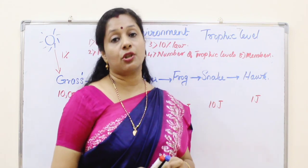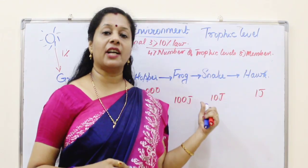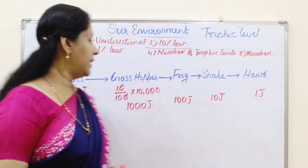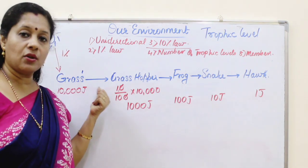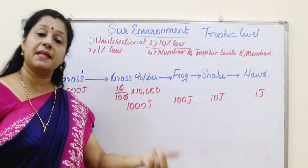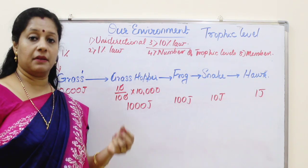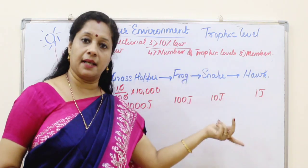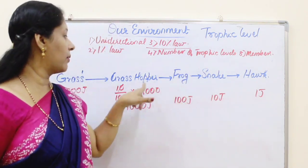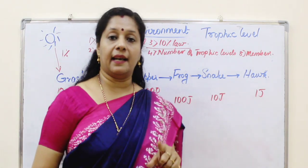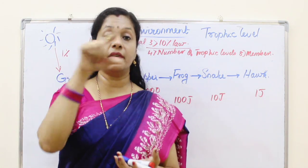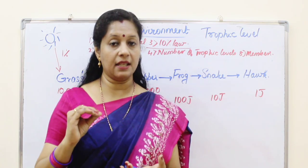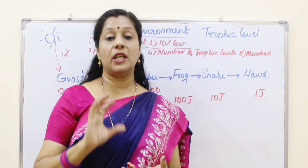Food chains actually do not exist in ecosystems — they are only a hypothetical situation, because in nature there are always choices. A grasshopper can eat grass or other plants, and a grasshopper can be eaten by a frog or another bird. So in nature there exists a series of interconnected food chains, called a food web. Food chain is hypothetical whereas a food web actually exists in nature.